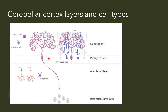Starting with Purkinje cells — they are the largest neuron type in the human brain. They were first described by the Czech scientist Jan Purkyně in the early 19th century. In fact, the name for these neurons should be pronounced 'Purkyně' rather than 'Purkinje,' although most English speakers pronounce it as 'Purkinje.'